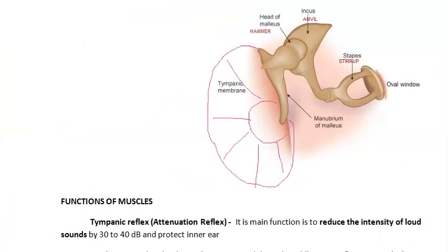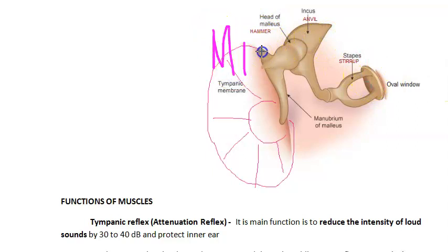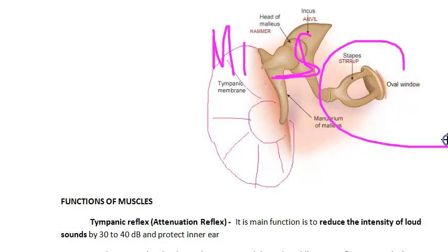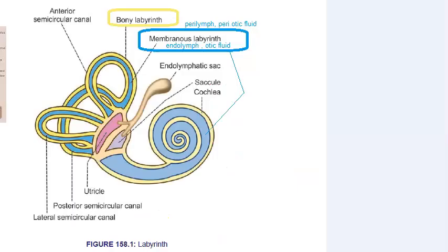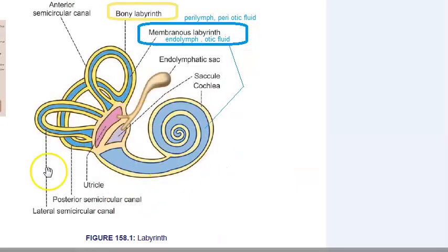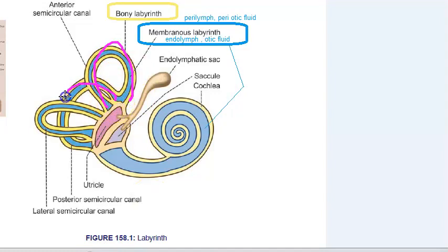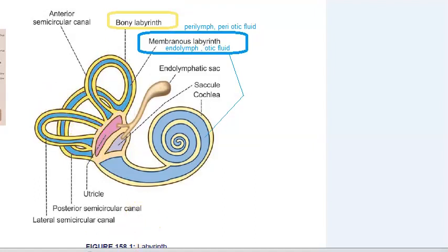Look at the three bones again: malleus, incus, and stapes — MIS. The stapes is attached to the oval window. In the inner ear you have the anterior semicircular canal, posterior semicircular canal, and the lateral semicircular canal.